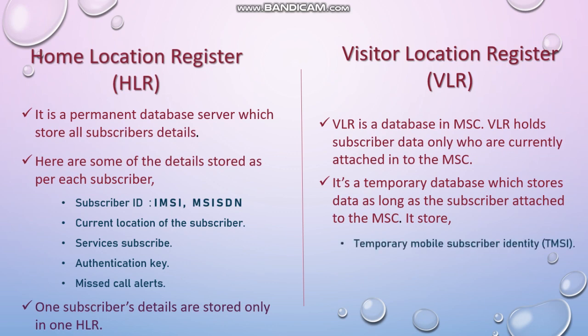Here are some details which will be updated in VLR: Temporary Mobile Subscriber Identity, which is a temporary ID that will change frequently so no one will be able to track by its ID; Location Area Identity, which is a number for the area defined by the telecom operator to identify which area you are in. VLR also keeps a record of current mobile status such as idle or busy mode.